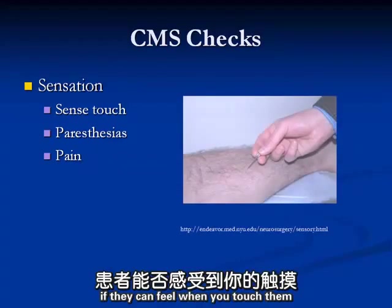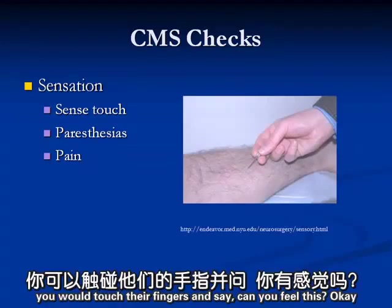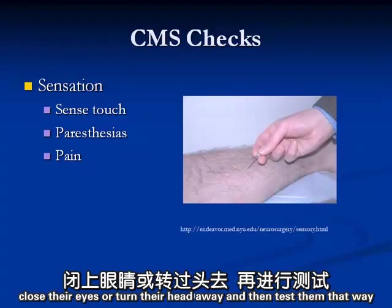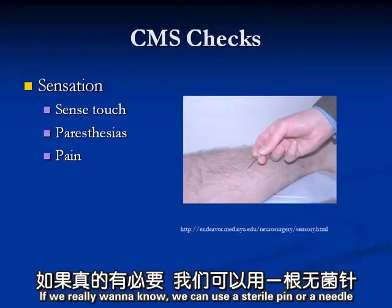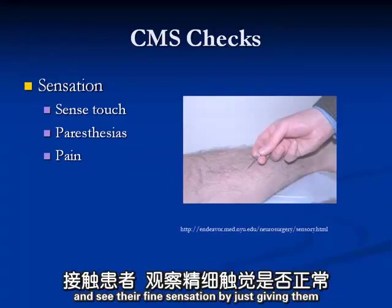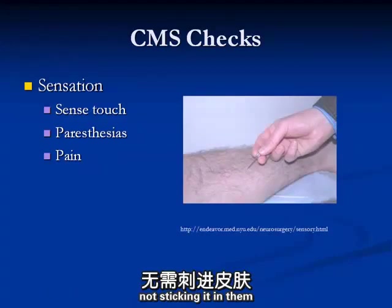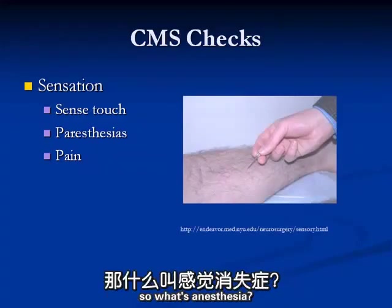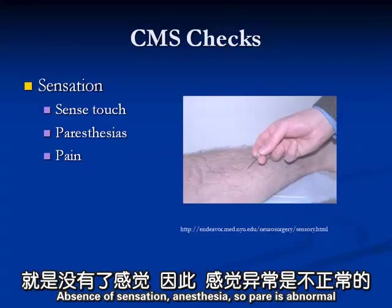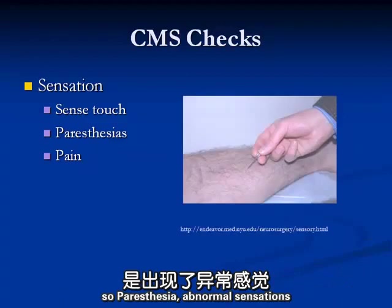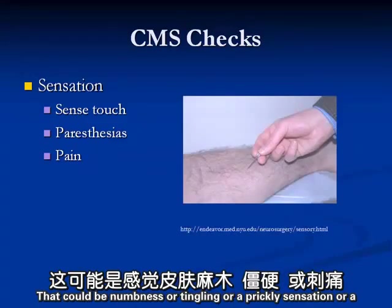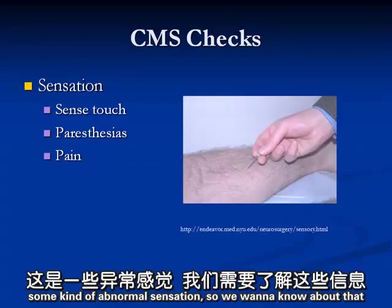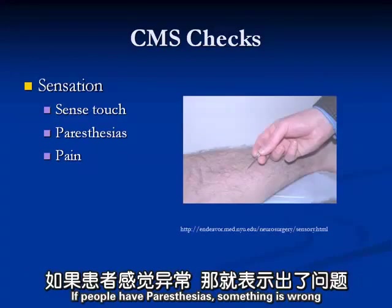Sensation: we want to see if they can feel when you touch them. With someone who has a cast on their arm, you touch their fingers and say, 'Can you feel this?' If you're not sure of their accuracy, you could have them close their eyes and then test them. If we really want to know, we can use a sterile pin or needle and just touch them with the tip - not stick it in them. Paresthesias are abnormal sensations. Anesthesia is absence of sensation; para means abnormal. Paresthesia could be numbness, tingling, prickly, crawly, or burning sensations - something is wrong and we need to investigate further.